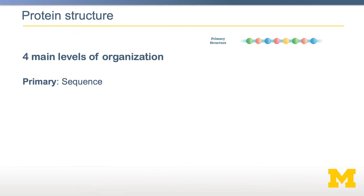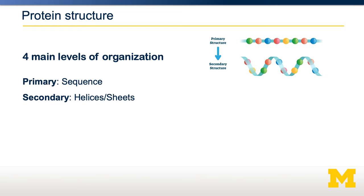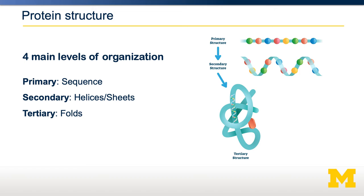There are four ways to think about protein structure. First is the primary sequence. For example, methionine might be followed by arginine, might be followed by tryptophan, whereas another protein might go methionine, arginine, glutamine. The sequence matters, and the sequence dictates both the function of the protein and how it's shaped. The sequence will then fold into what we call secondary structures, including helices and sheets. Those secondary structures then fold over each other to form the tertiary structure, which is the complicated, involuted, folded structure of any given monomeric protein.